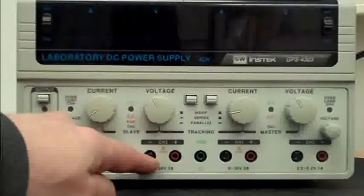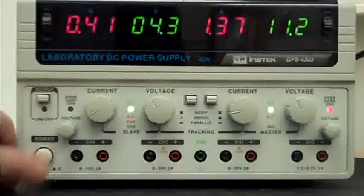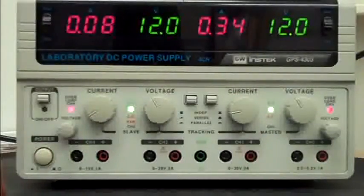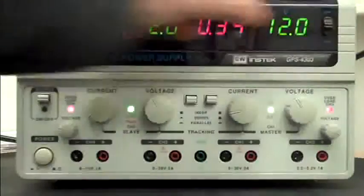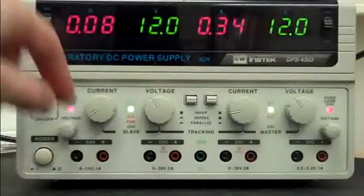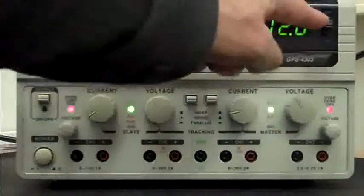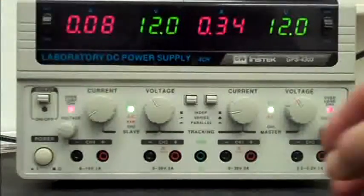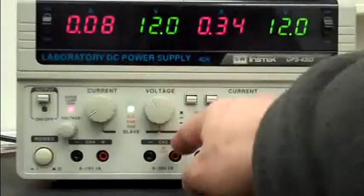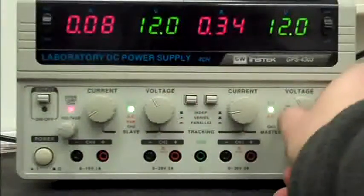To do this, firstly, switch on the power supply. Now, in tracking mode, if we set this switch up and this switch up, so that we're looking at the outputs of channel 1 and channel 2 on the meters, we can control the voltages of both of these supplies together.